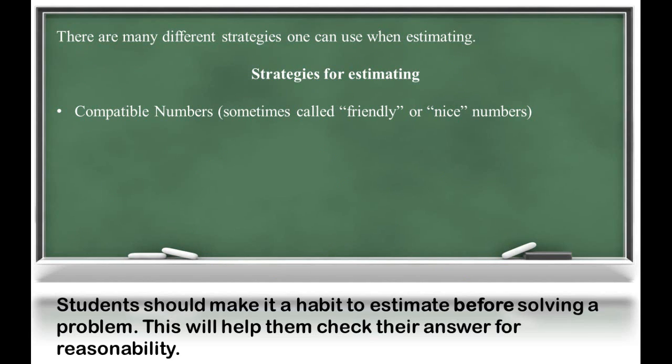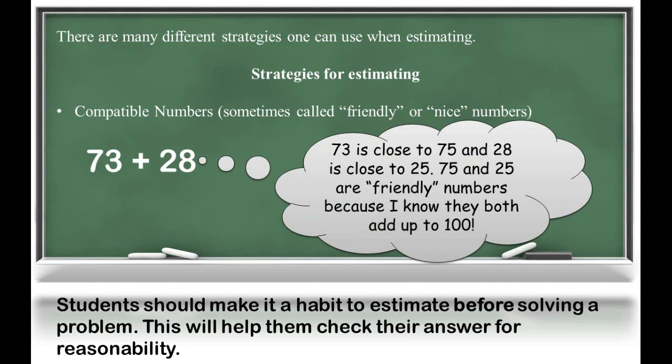The first strategy we will look at is compatible numbers, sometimes called friendly or nice numbers. If I look at 73 plus 28, I can see that 73 is close to 75 and 28 is close to 25. By adding 75 and 25, they are friendly numbers because I know I will get 100.